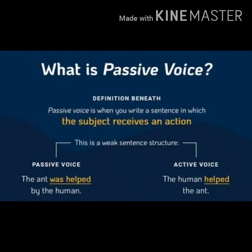Passive voice is when you write a sentence in which the subject receives an action. For example, active voice: 'The human helps the aunt.' When making passive voice, 'the aunt' will become our subject: 'The aunt was helped by the human.' Here, the action is received by the aunt.